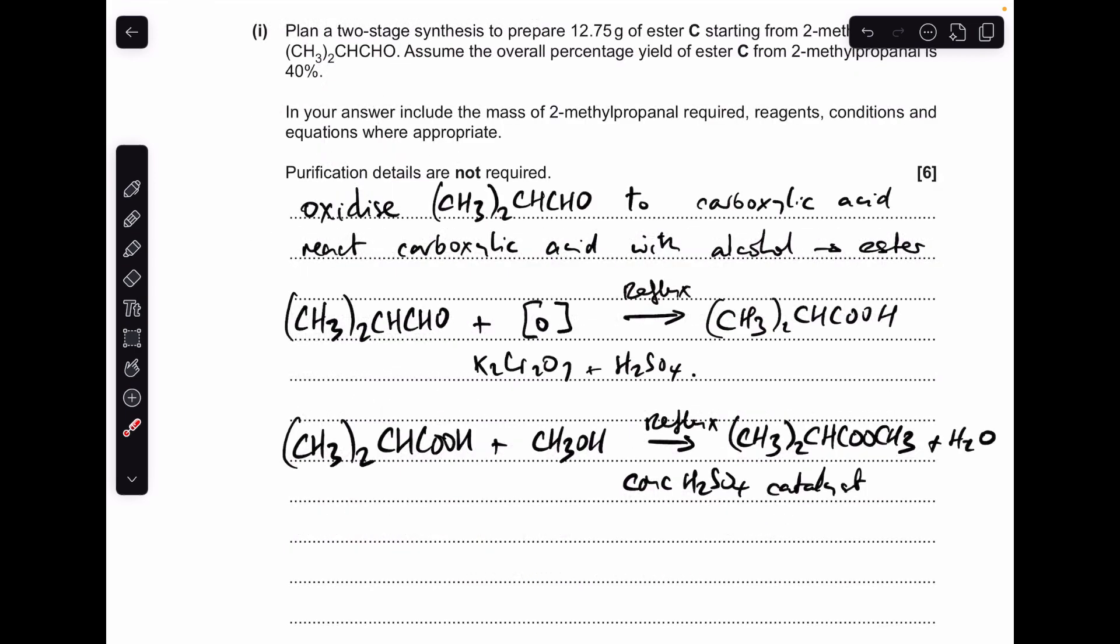And then step two, where we react the carboxylic acid with an alcohol. To get the methyl ester, which is what it is, we react it with methanol. Again, you need to heat it, so I'm just using reflux. But you need to have a concentrated sulphuric acid catalyst present. And obviously that's making the ester, and it also generates a water molecule.